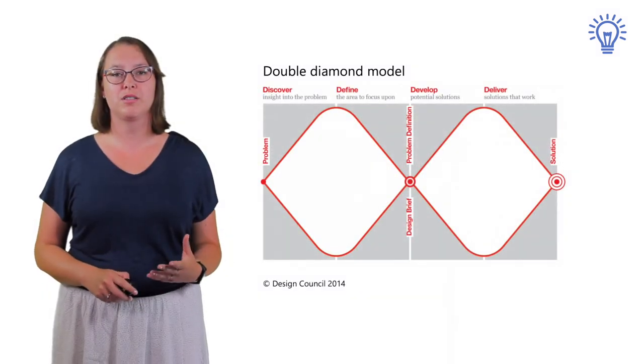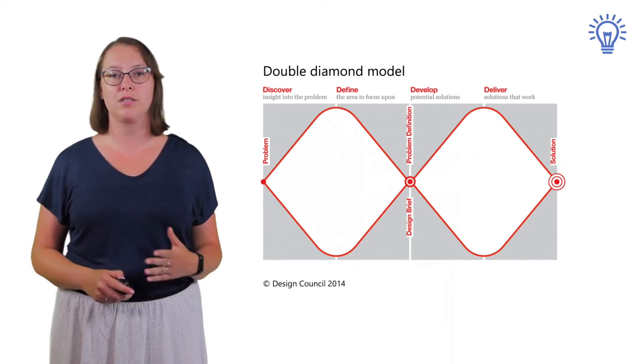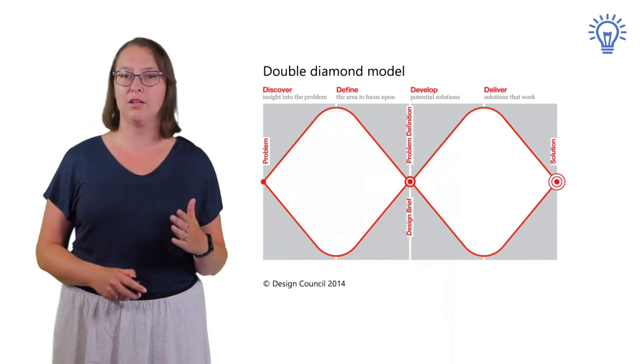The last model that we will discuss is the double diamond model from the Design Council. This model has four steps: Discover, Define, Develop, and Deliver.